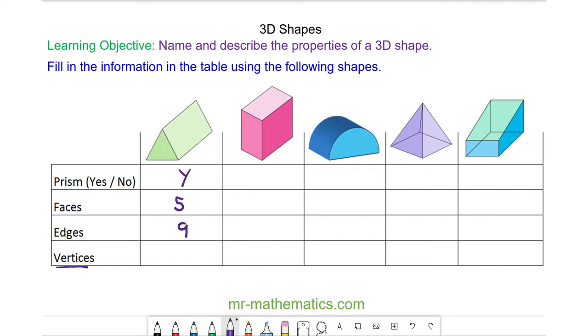Vertices is a mathematical name for corners and one corner is called a vertex. So vertex is the singular and vertices is the plural. So we have one, two, three at the front, four, five plus the one that you can't see at the back which is six. So these are the properties of a triangular prism.